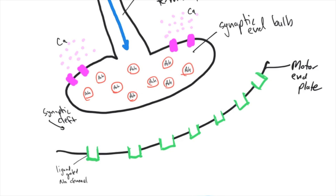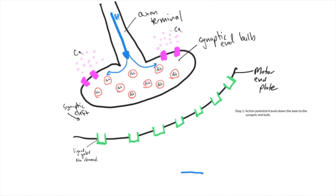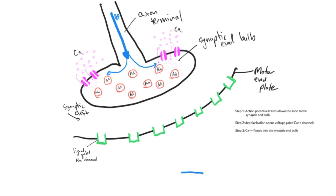Step one: an action potential propagates down the axon to the axon terminal into the synaptic knob. Step two: the depolarization event occurring on that axon opens those voltage-gated calcium channels. Step three: calcium floods into the synaptic knob. Step four: that influx of calcium causes the vesicles filled with acetylcholine to bind to the synaptic knob cell membrane and exocytose into the synaptic cleft.